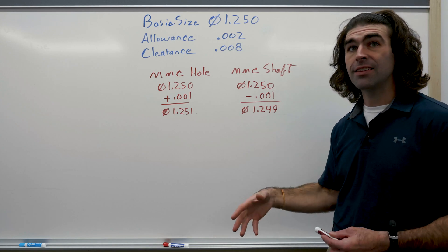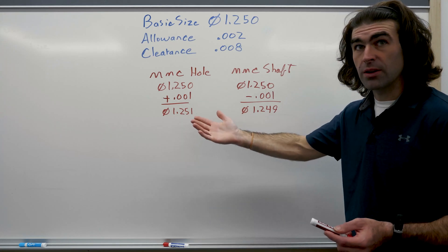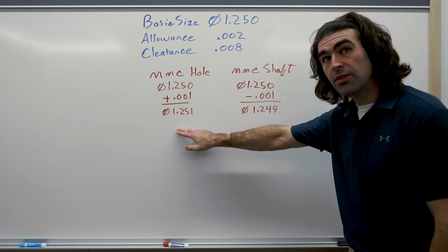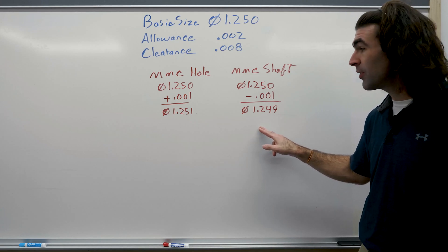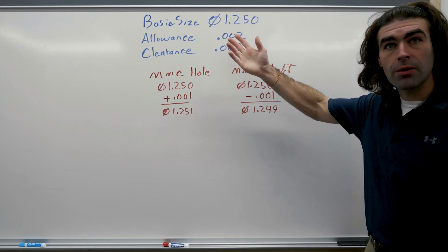Now to check yourself, because it's easy to get the sign switched up, you just directly compare these with the allowance equation. So the allowance is the MMC of the hole minus the MMC of the shaft. Subtract these two numbers, you get this number. Easy peasy.